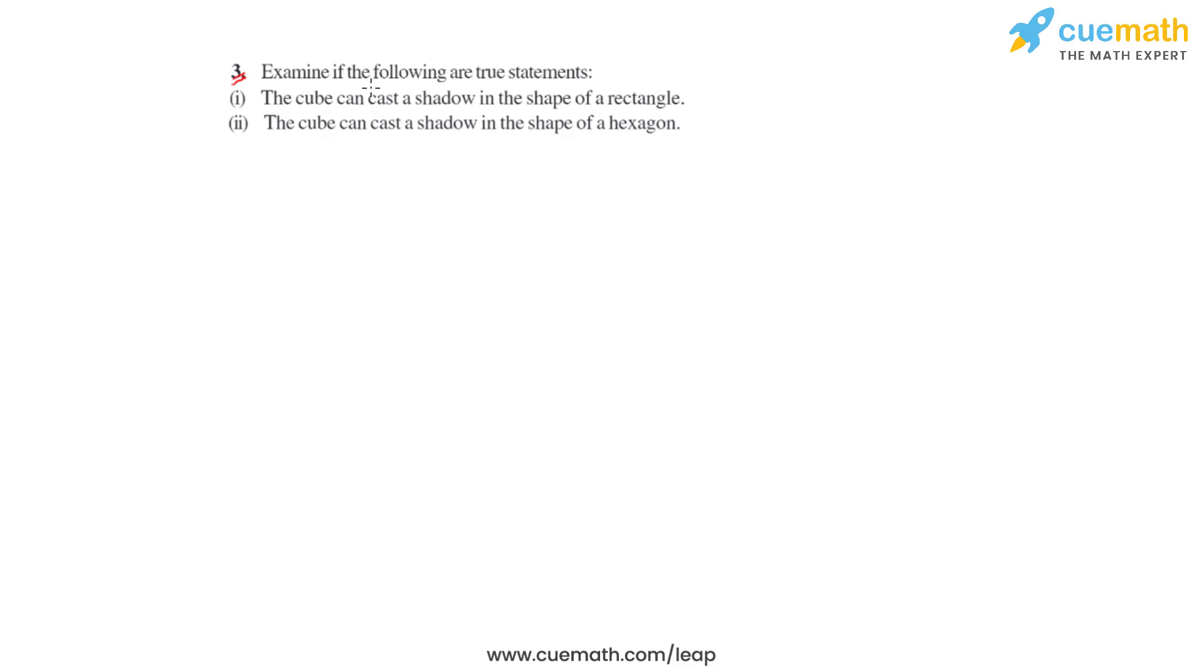So in the third question of this fourth exercise, we have been given a few set of statements and we will have to determine which of the following statements are true. The first of these statements is whether a cube can cast a shadow in the shape of a rectangle, and the second one is whether a cube can cast a shadow in the shape of a hexagon.